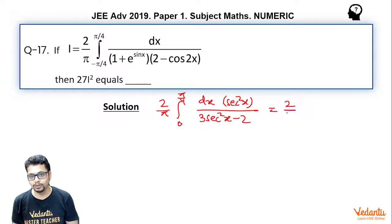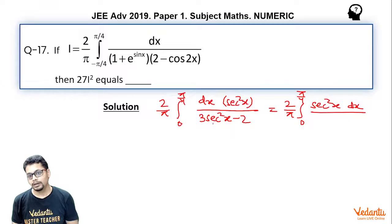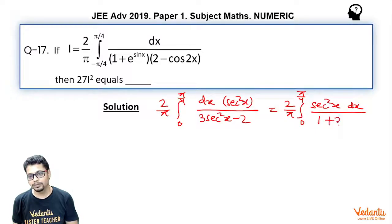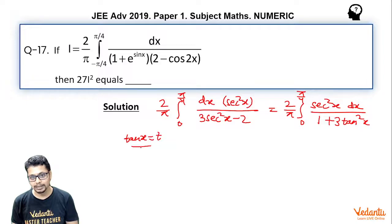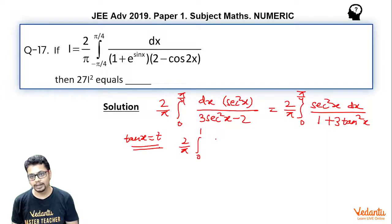This can be written as 2 by π integral from 0 to π/4 of sec²x dx divided by (1 + 3tan²x), since 3sec²x − 2 = 3(1 + tan²x) − 2 = 1 + 3tan²x. Now taking tan x = t, sec²x dx becomes dt, and the limits change from 0 to 1, giving dt divided by (1 + 3t²).